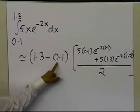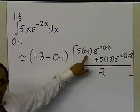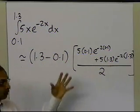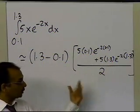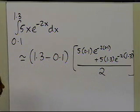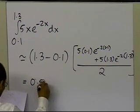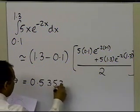So it's basically b minus a times the value of the function at a plus the value of the function at b, divided by 2, because you're taking the average value of the function at a and b and multiplying it by the width of the interval. And this number here turns out to be 0.53530.